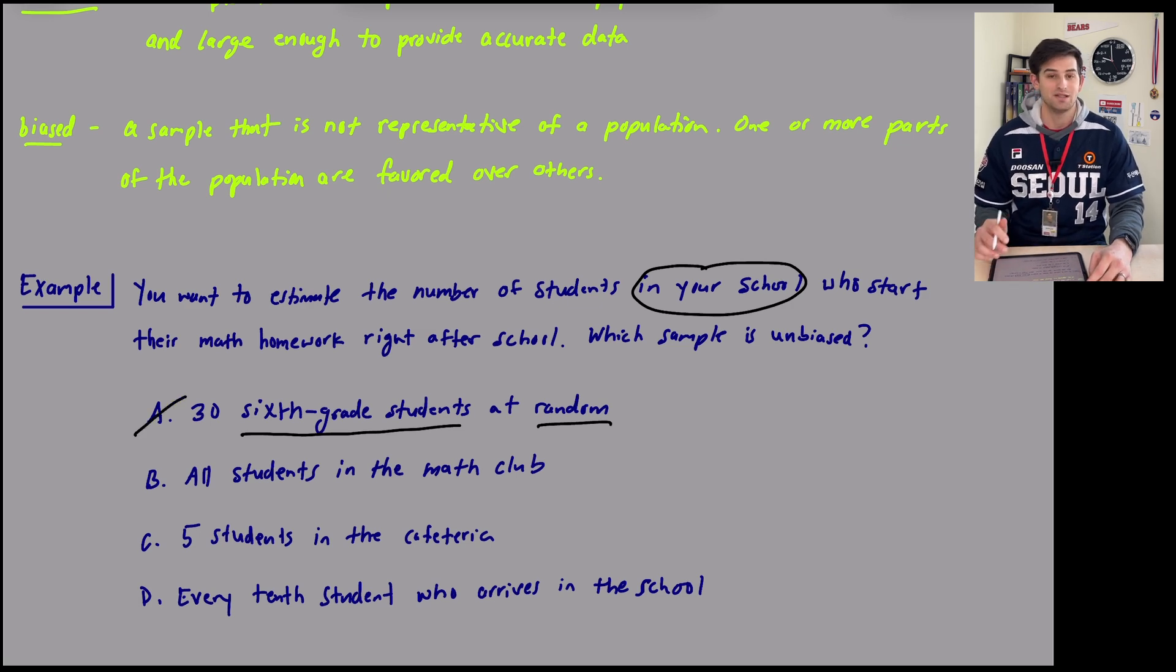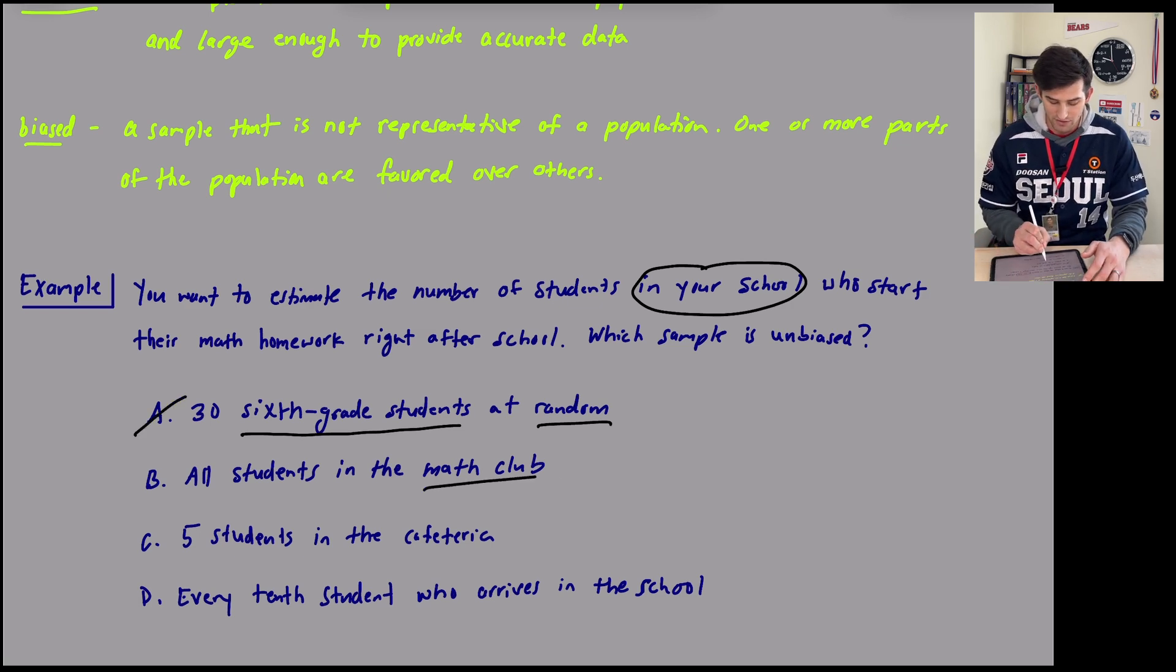Option B says all students in the math club. Well, all of these students are in one set group. They're in a math club. Not only are they in one set group, but they're in a math club. So of course, if there are students who are likely to start their homework right after school, it's probably going to be the students that are in the math club, right? So this one is no good. It's not random enough.